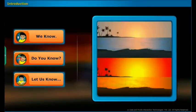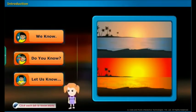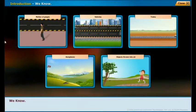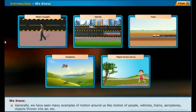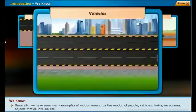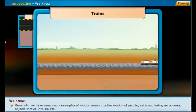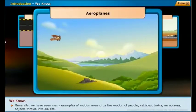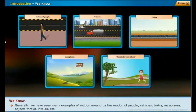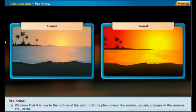Introduction: Before entering into the chapter, generally we have seen many examples of motion around us — like motion of people, vehicles, trains, aeroplanes, objects thrown into air. We know that it is due to the motion of the earth that phenomena like sunrise, sunset, and changes in the seasons occur.